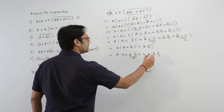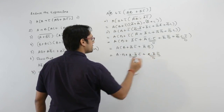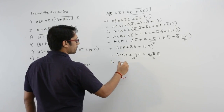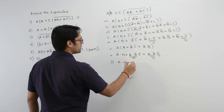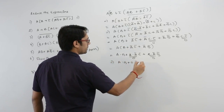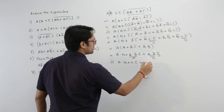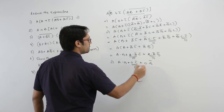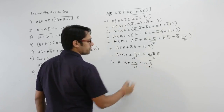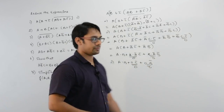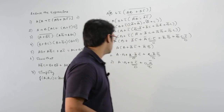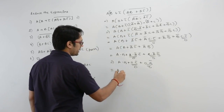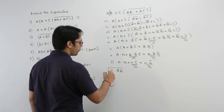Since a·a' = 0, it can be written as 0. So the expression becomes a·b plus 0·c' plus 0·b'. These terms are 0 and 0, so it reduces to AB only.